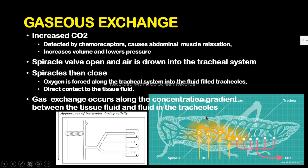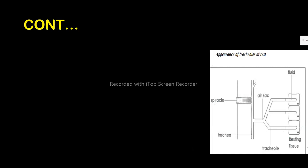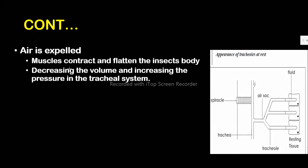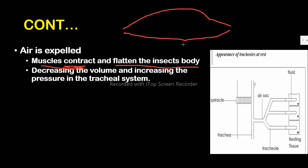Now, how about exhalation — when the insect wants to expel gases? To expel air, the process is antagonistic to inhalation. The abdominal muscles must contract, which flattens the insect's body. When a muscle contracts, it shortens and becomes stiff; when it relaxes, it loosens and lengthens. So to expel air, pressure inside the insect's body must be higher than atmospheric pressure so that air is pushed outside.